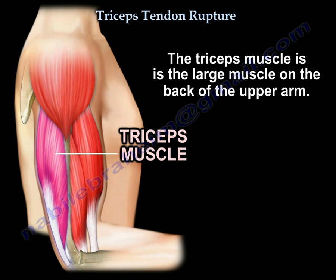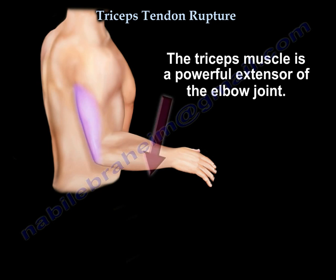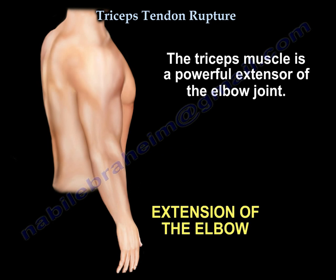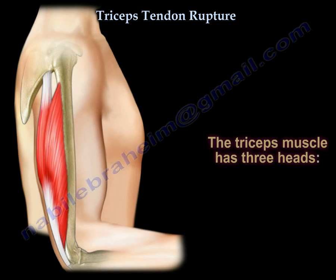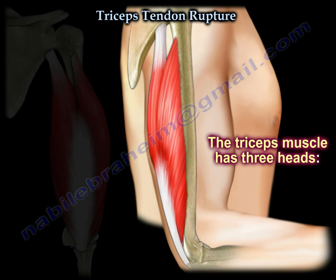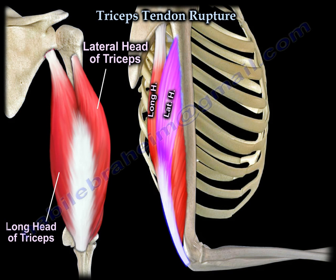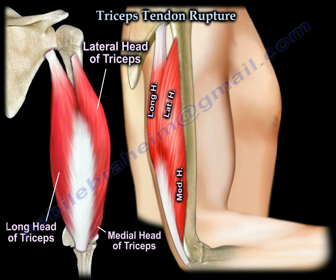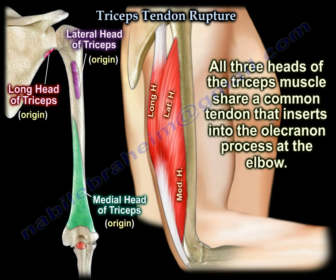The triceps muscle is a large muscle on the back of the upper arm and a powerful extensor of the elbow joint. There are three heads of the triceps muscle: the long head, the lateral head, and the medial head. All three heads share a common tendon that inserts into the olecranon process at the elbow.